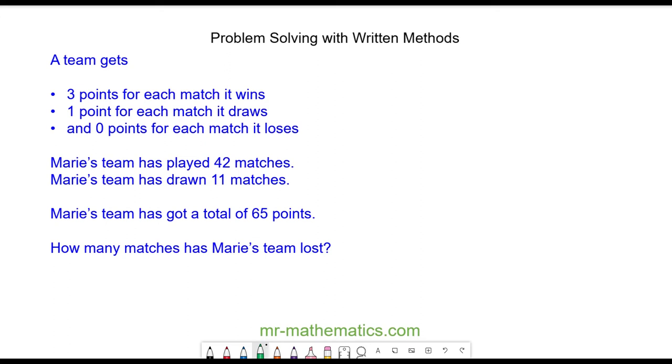In this question, we're told that Marie's team has played 42 matches, and for every match Marie's team wins, she gets 3 points, for a draw, 1 point, and if they lose a match, they get 0 points.